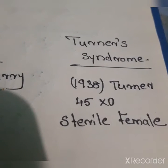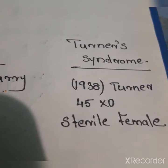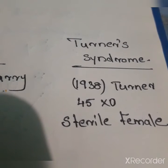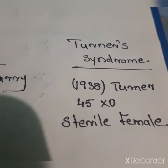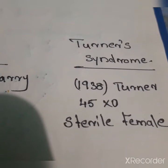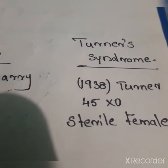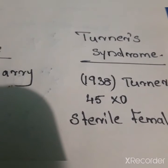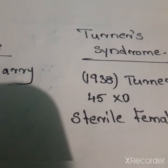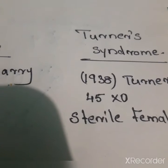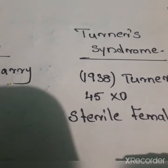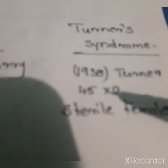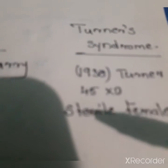The next disorder is Turner's syndrome. This disorder was first described by Turner in 1938. It is caused due to the absence of one X chromosome, giving a 45, XO condition. Normally females have 44 autosomes and 2X chromosomes.